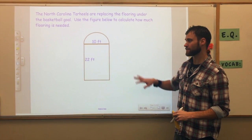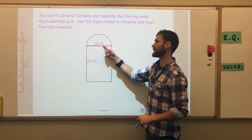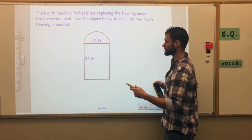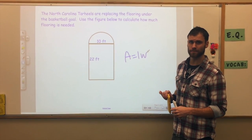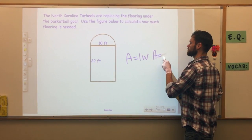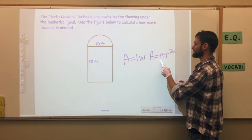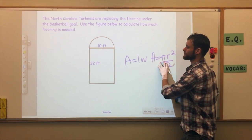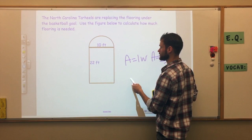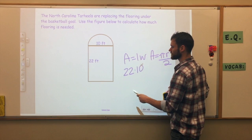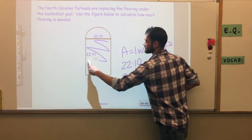Now one more example involving a circle. If you draw a line straight across, you can see there's a semicircle with a rectangle. The rectangle formula is length times width. The area of a full circle is pi r squared. I have a semicircle, so I divide by two. For the rectangle: 22 times 10 equals 220 feet squared — that's the space to fill this part of the figure.